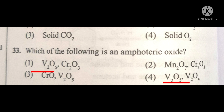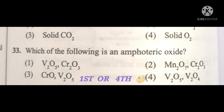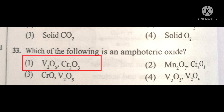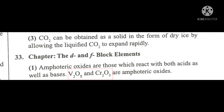In this question, option first and option fourth can be the answer because the probability of V2O5 being similar from the start. To decide the correct answer among option first and option fourth, we take the help of other options. In the other options, Cr2O3 is being repeated more, so this helps find our answer. Therefore, the first option will be the correct answer. You can verify your answer here.